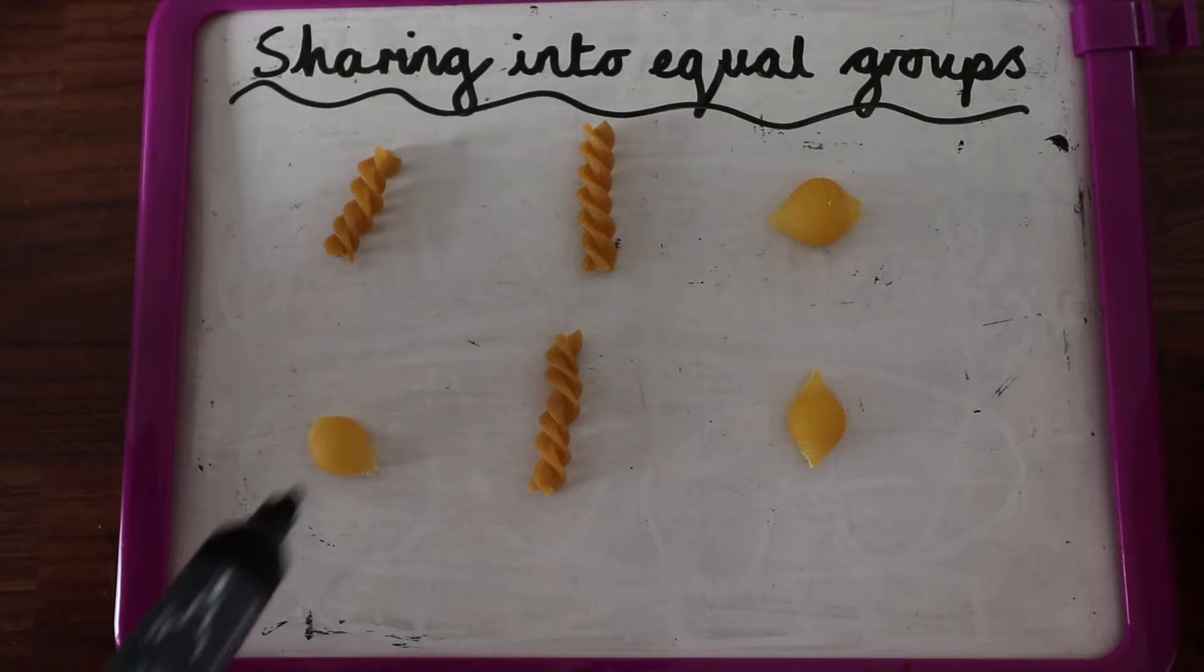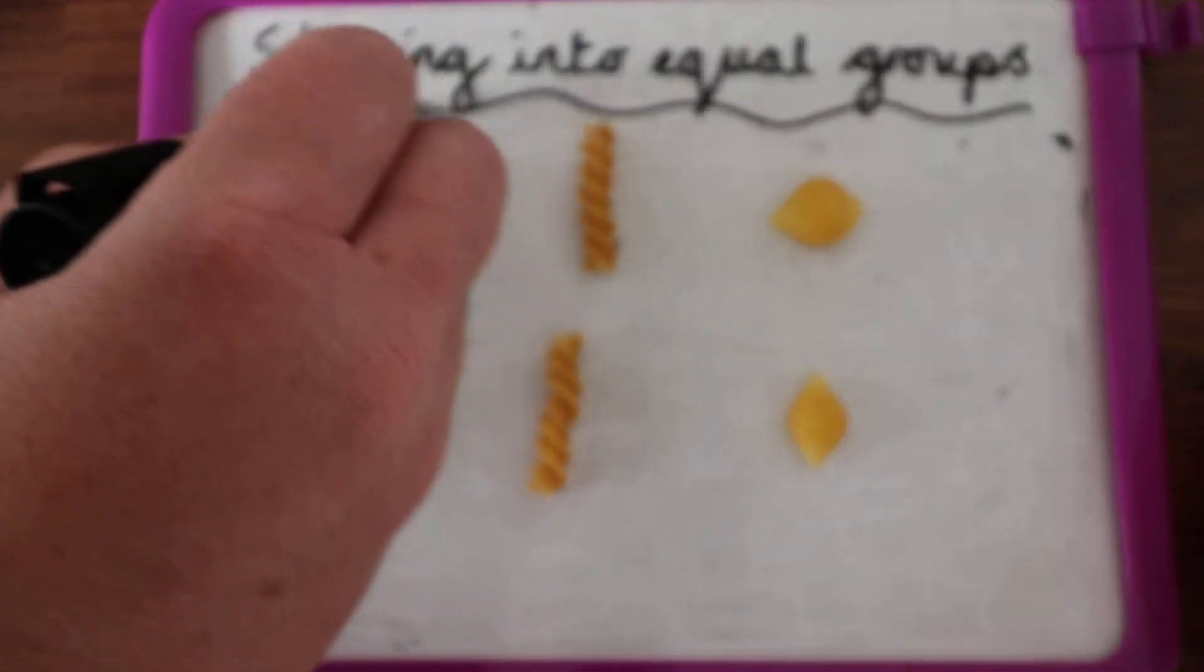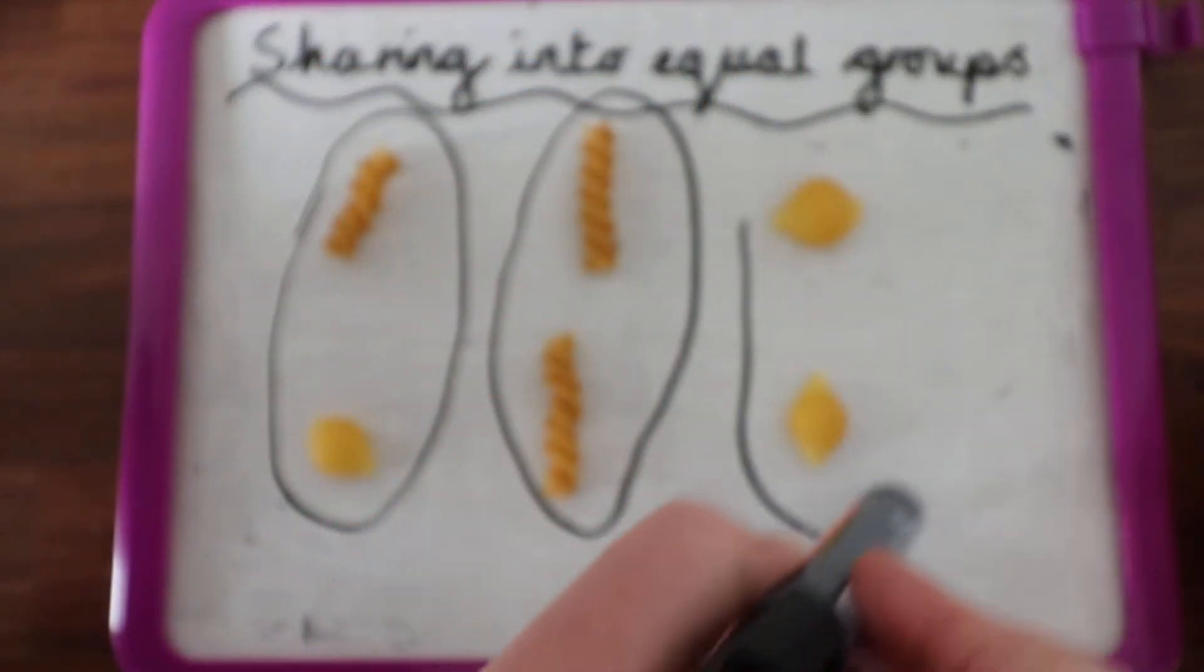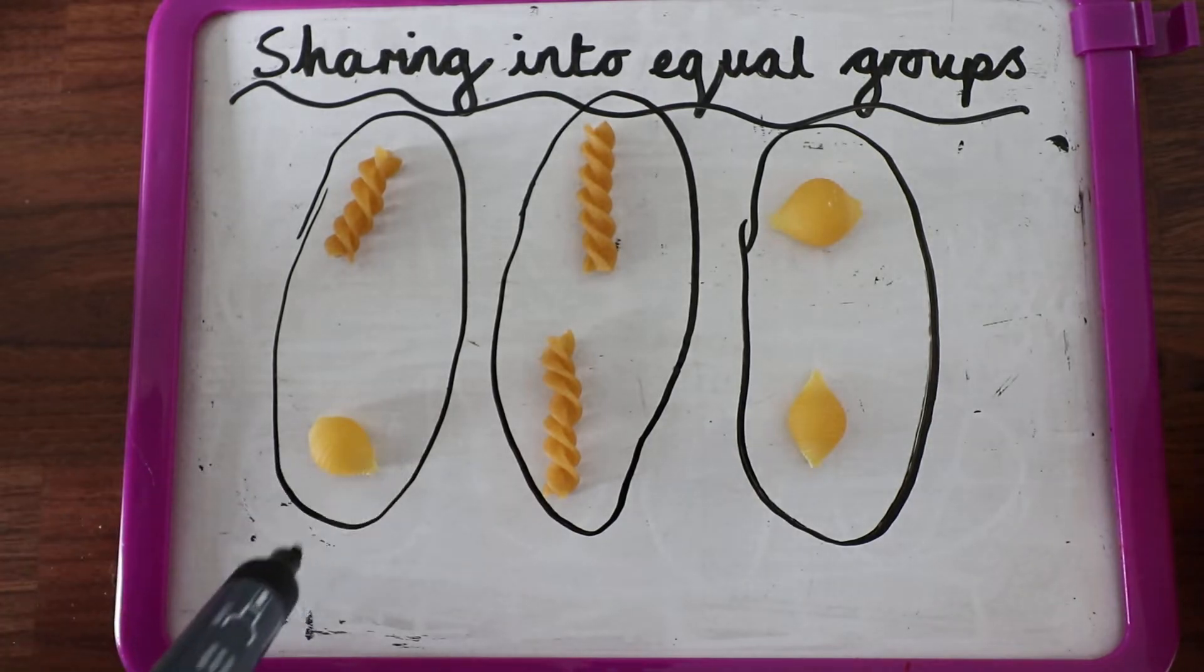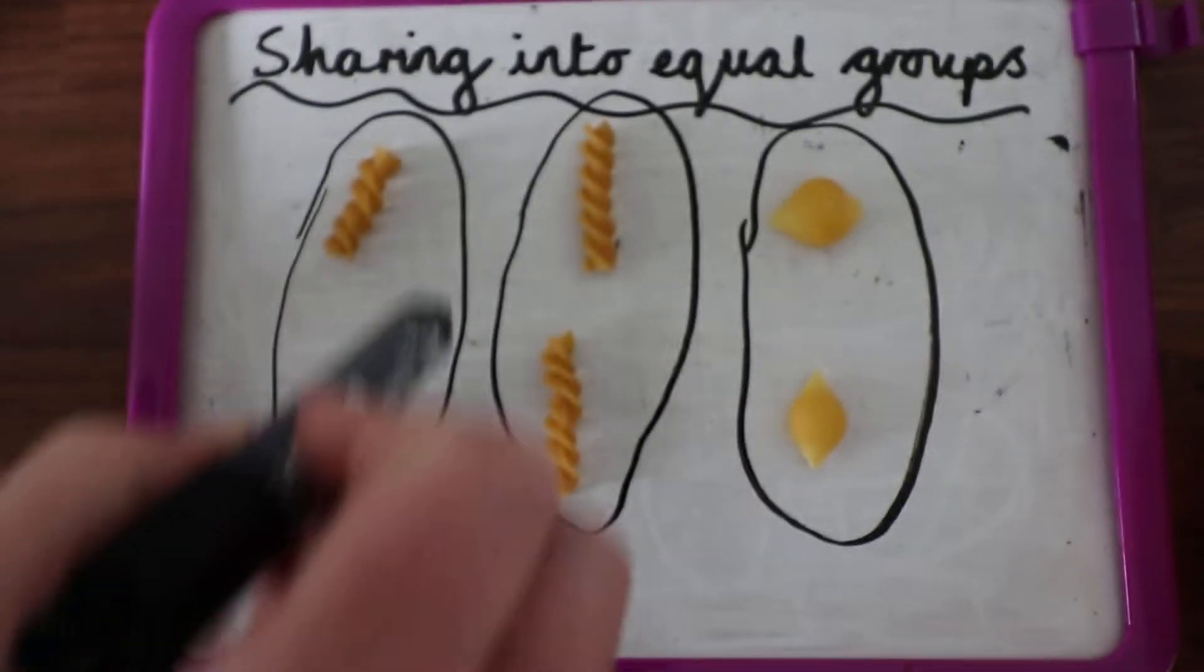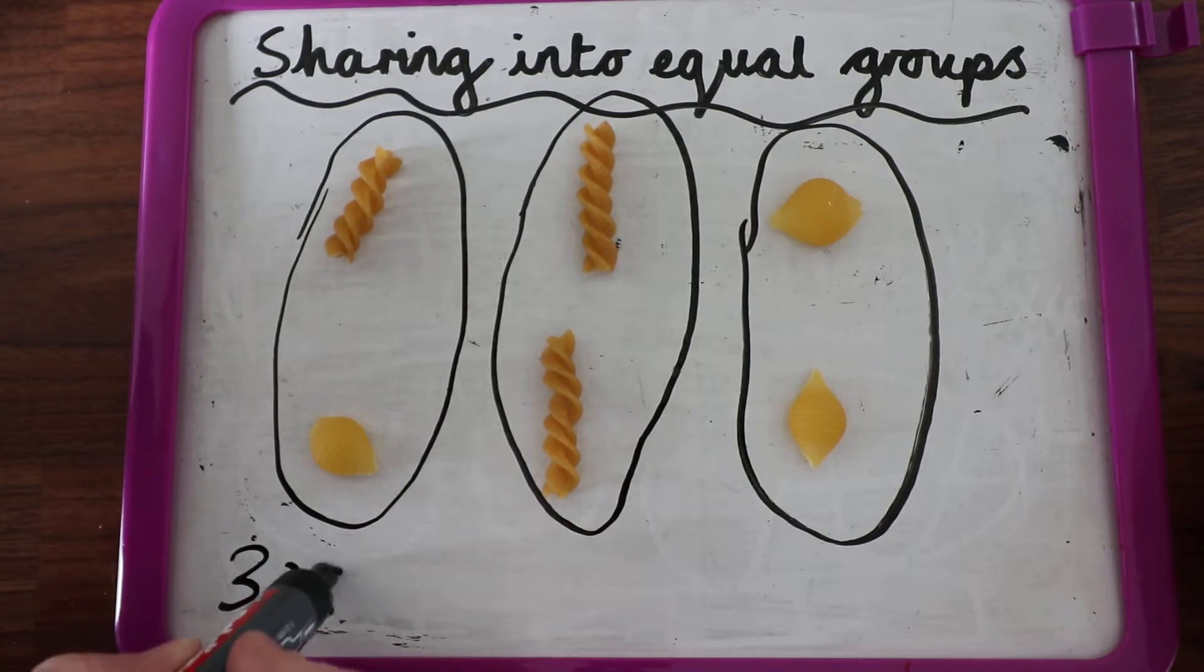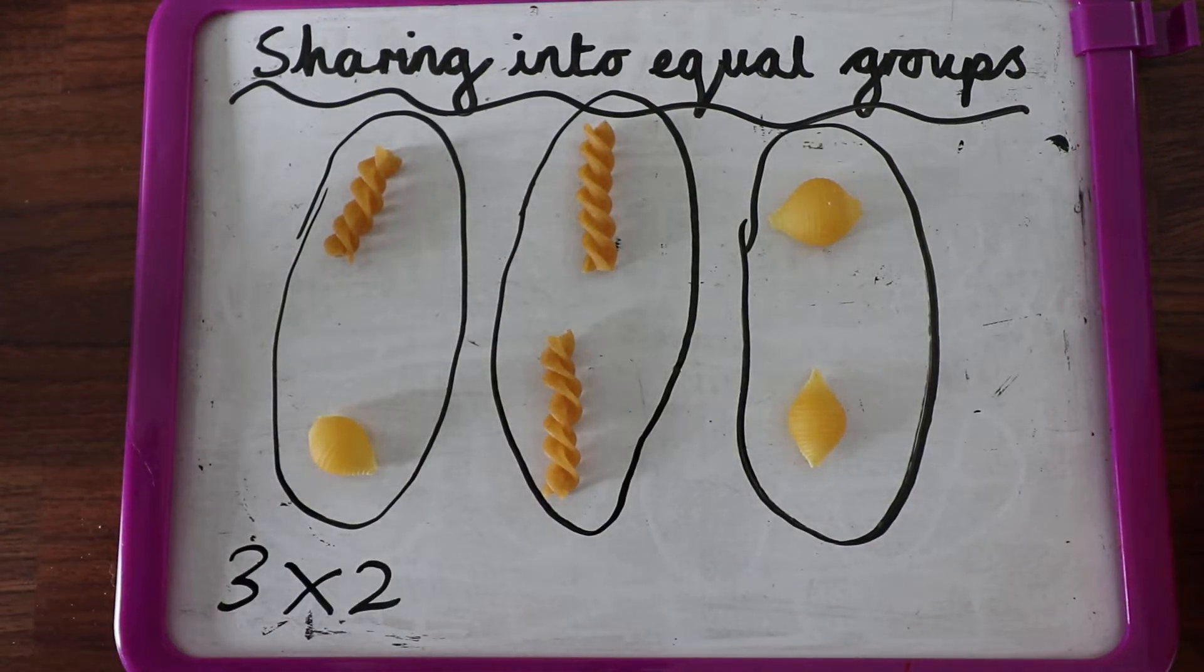So my array represents - I'm going to draw around my little group so I've got to make sure they're in line with each other. So my array represents one group of two, two groups of two, three groups of two. Can you see that? Three groups of two.